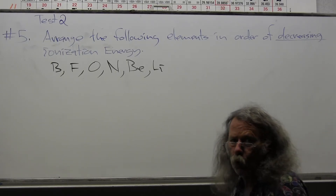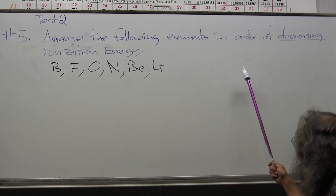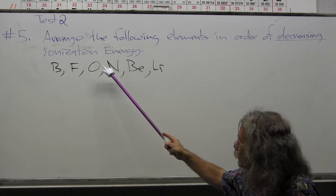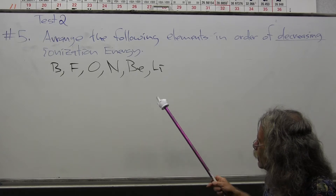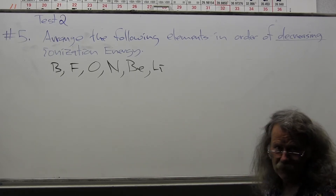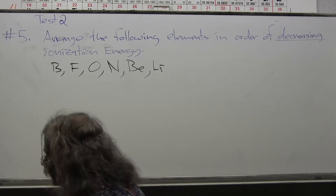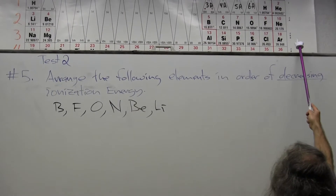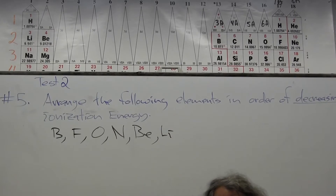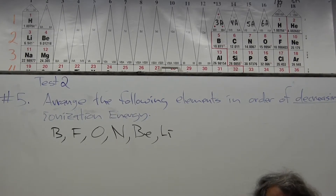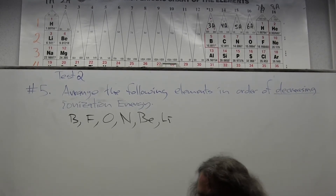This is test number two, question number five on the practice test. The question is: arrange the following elements in order of decreasing ionization energy — so we're going from the highest ionization energy to the lowest. This is going to be easy to answer because it's only the second row, and you just need to understand the trend rather than memorize all the ionization energies.